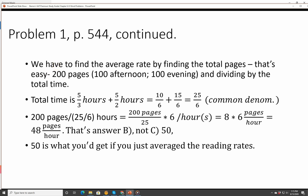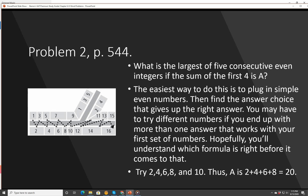Sometimes the short way is the long way. Problem 2, page 544. What is the largest of five consecutive even integers if the sum of the first four is A? The easiest way to do this is just plug in simple even numbers. Then find the answer choice that gives you the right answer. You may have to try different numbers if you end up with more than one answer that works, but hopefully you'll understand which formula is right before it comes to that.